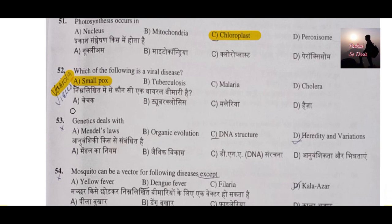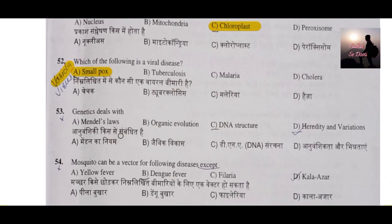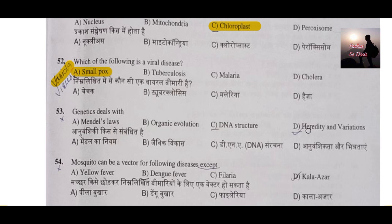Question number 53: Genetics deals with what — it is related to heredity and variations. Heredity means that if a disease was present in your parents or their parents, it gets transmitted to the next generation. Variations are also seen across different species because of this heredity. So genetics deals with heredity and variations — aanuvansheekta aur bhinnataon ke saath.